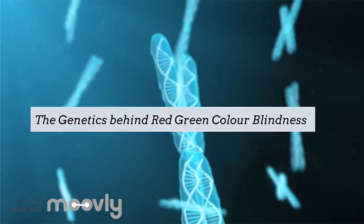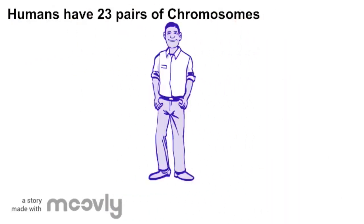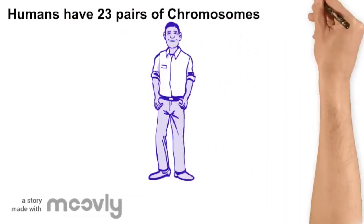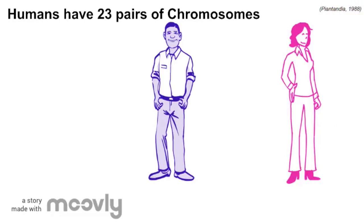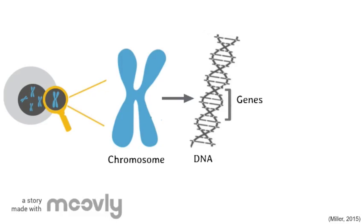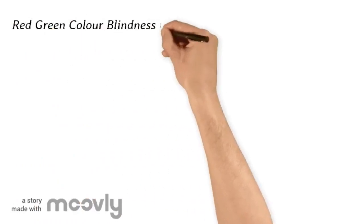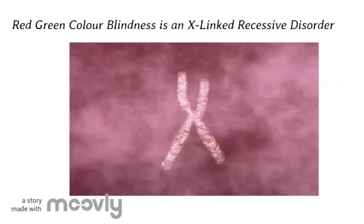These are chromosomes. Human beings have 23 pairs of chromosomes. The last pair are called sex chromosomes as they determine an individual's sex. XY represents males, whereas XX represents females. Chromosomes are structures that contain genes, and genes contain instructions that are responsible for the development of cells, tissues, and organs. Studies show that red-green colorblindness is due to an atypical X chromosome.